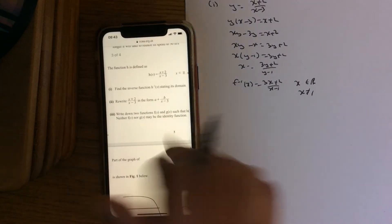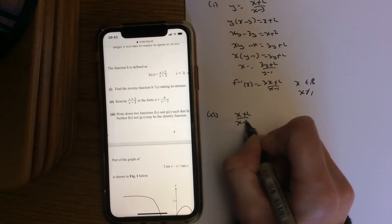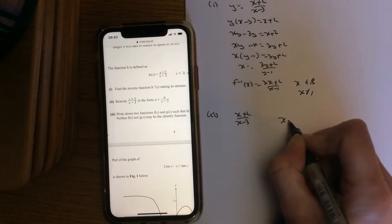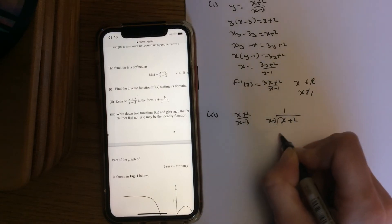Part 2: rewrite (x+2)/(x-3) in that form. So basically x+2 divided by x-3, x goes into x once.